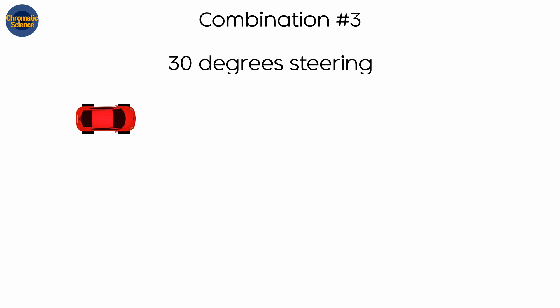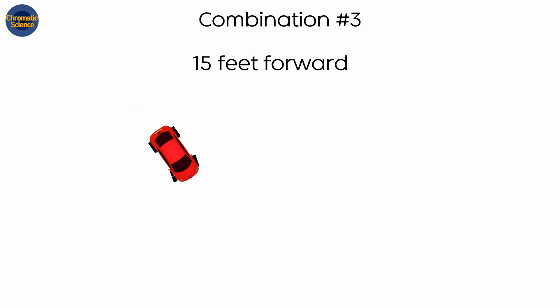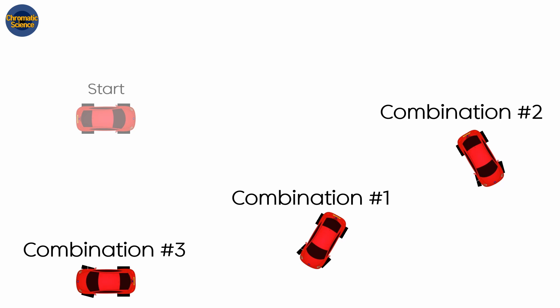Third combination: steer the front wheel by 30 degrees, move forward by 15 feet, move forward by 30 feet. So what do we get? The cars arrived at different locations. The car is a non-holonomic system because the order of the input affects the final location of the car.